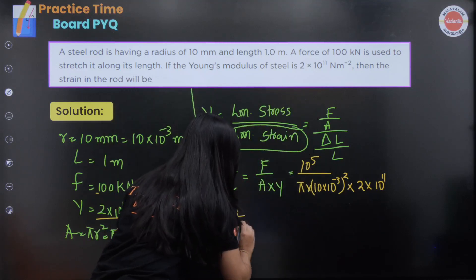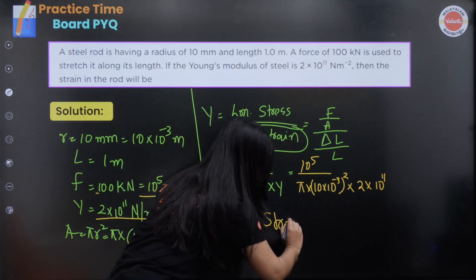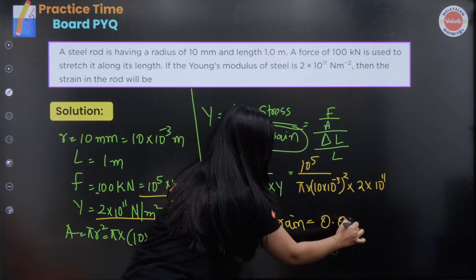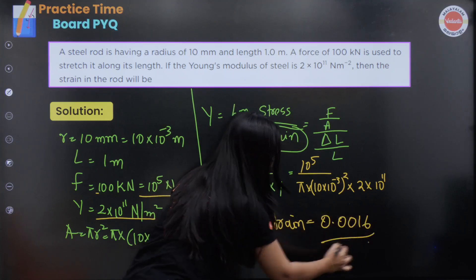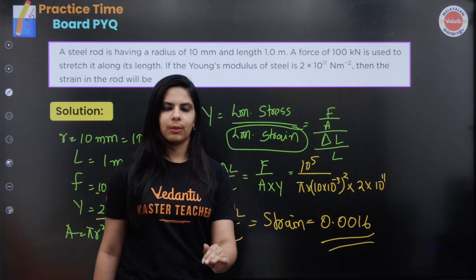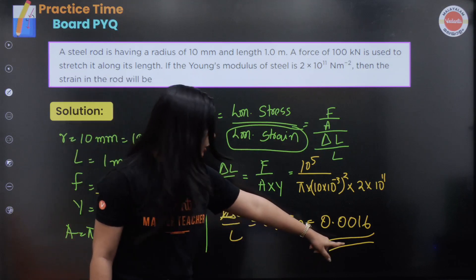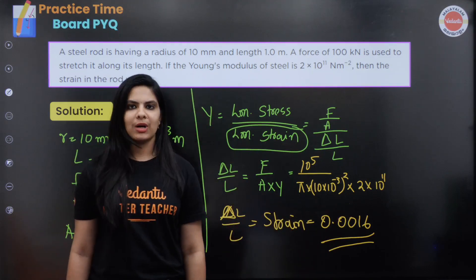Delta L by L, that is strain. So the answer is 0.0016. This is a unitless quantity because change in dimension divided by original dimension, the unit is the same.